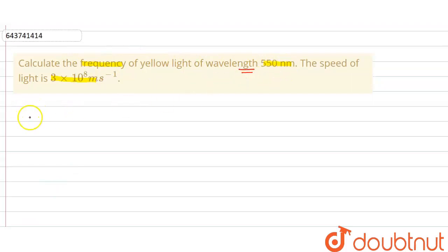Here we have given the wavelength lambda is equal to 550 nanometer. In meter we can write this as 550×10^-9 meter.